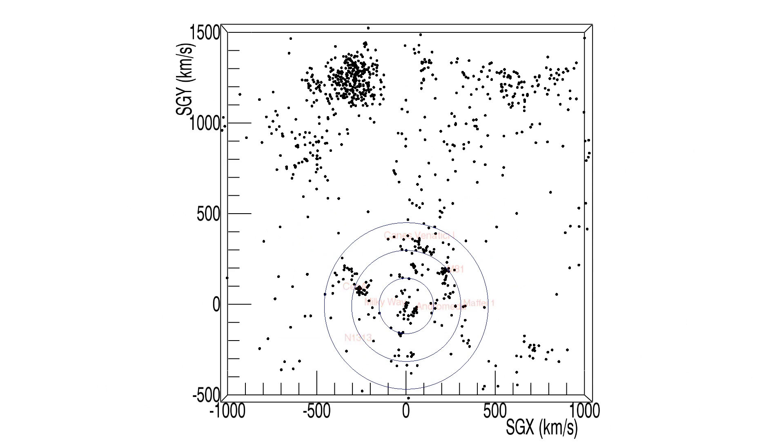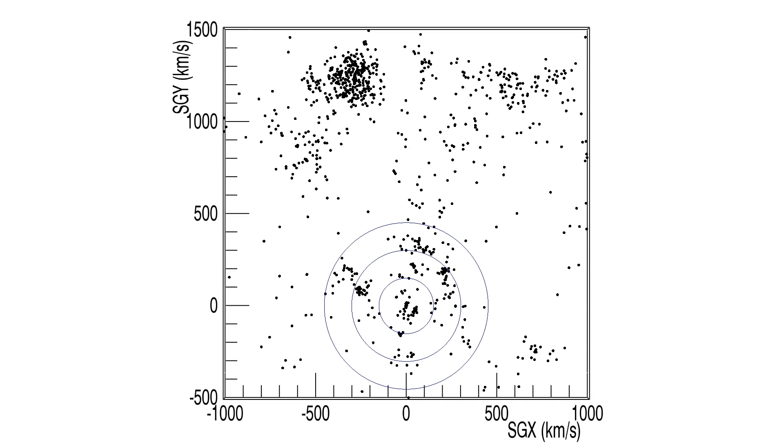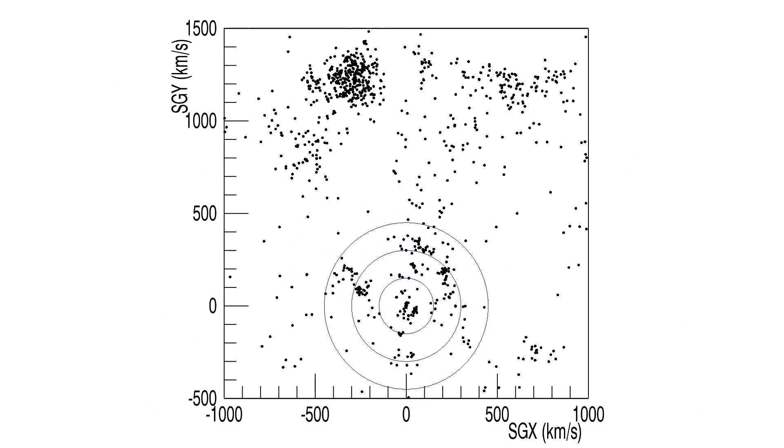Returning to a polar view of the local sheet, the scene expands to include the Virgo cluster. The local sheet trails off in density beyond our location in the direction away from the Virgo cluster. Our inventory of accurate distances is severely diminished beyond 500 km per second.